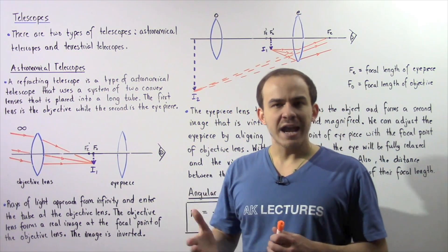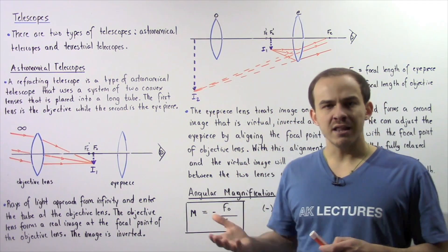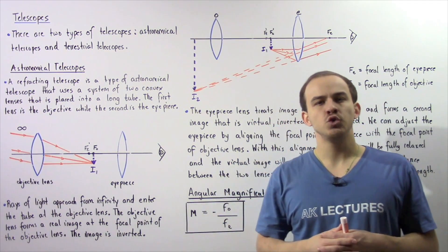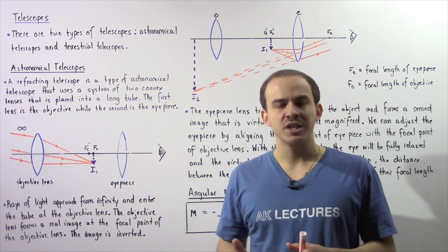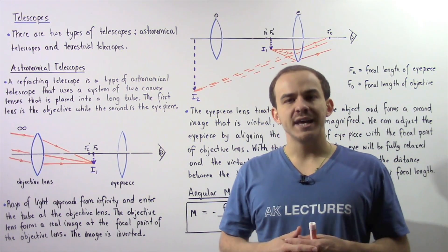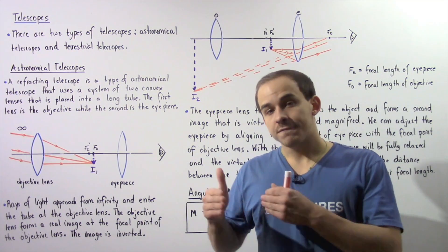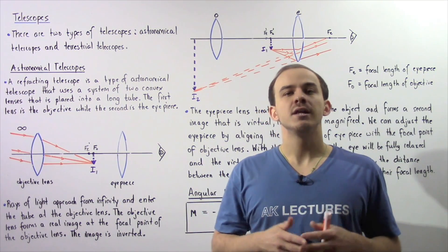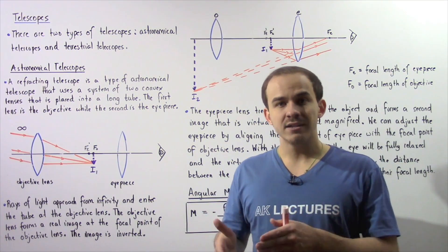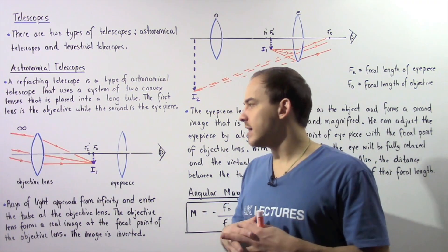A refracting telescope is a type of astronomical telescope that uses a system of two convex or converging lenses placed inside a long tube. The first lens is known as the objective lens, and the second lens is known as the eyepiece lens.